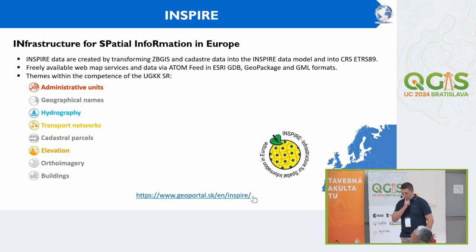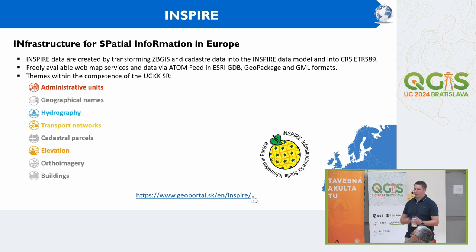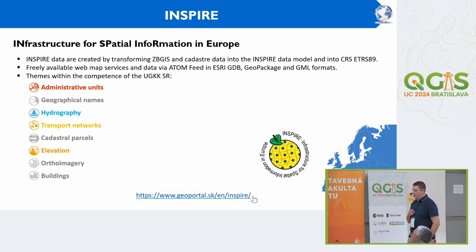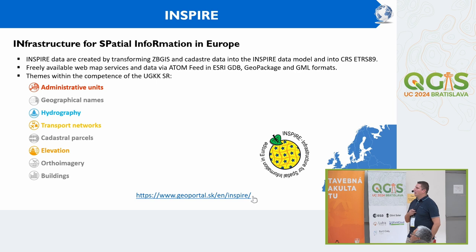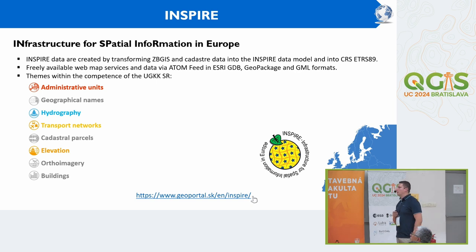We also provide data in the INSPIRE data model. These data are produced by transforming ZBGIS and cadastre data into the INSPIRE data model in the ETRS-89 coordinate system. They can be provided via WMS services or Atom feed, where you can download zip files in GML, GeoPackage, or geodatabase format. The themes within our competence include administrative units, geographical names, hydrography, transport network, cadastral parcels, addresses and buildings, and elevation.